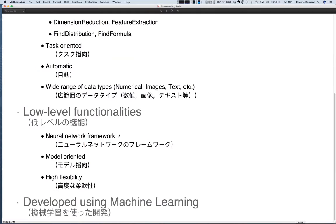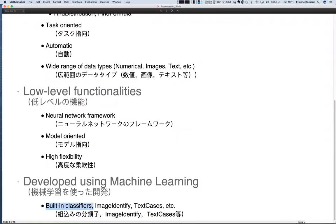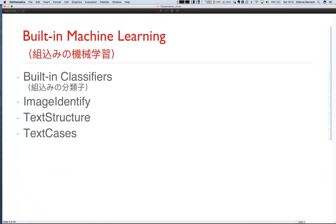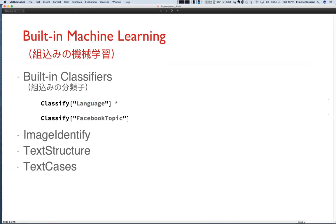The final category consists of functions we built using machine learning ourselves: built-in classifiers, ImageIdentify, TextCases, and other computer vision and natural language processing functions. Let's start with these built-in ones since they're the simplest. I'll present a few of the functions we implemented and show what's achievable with machine learning.